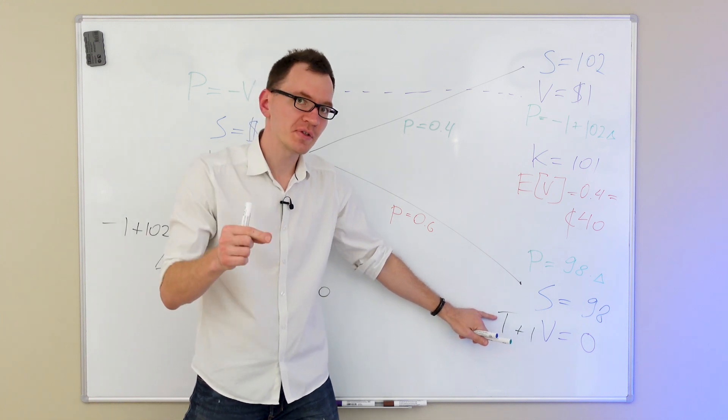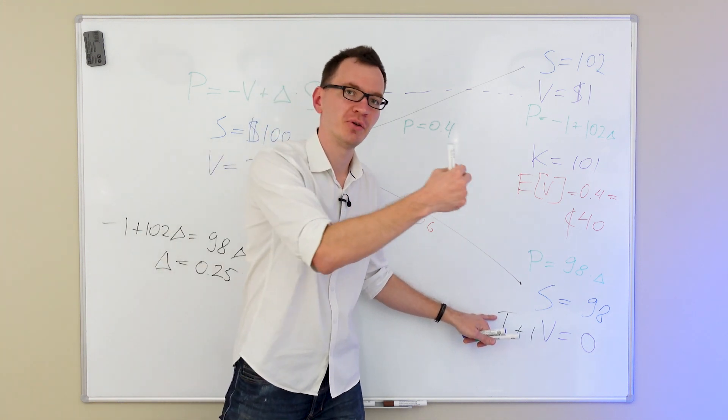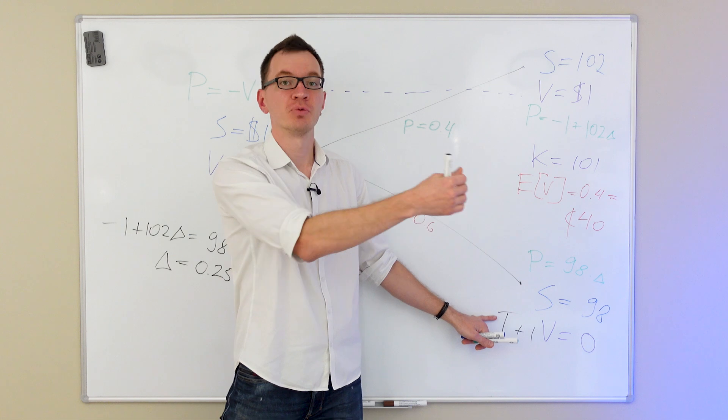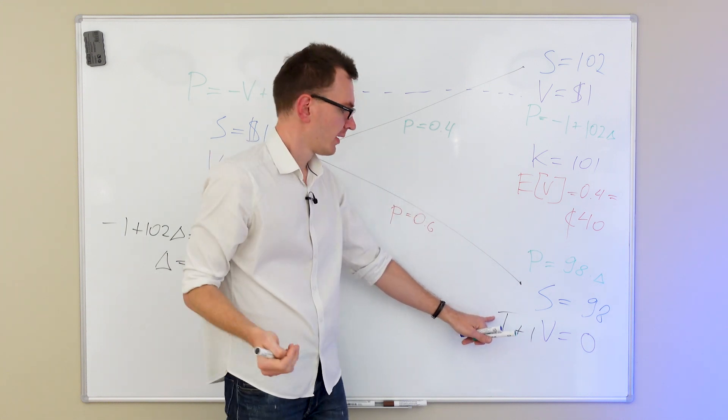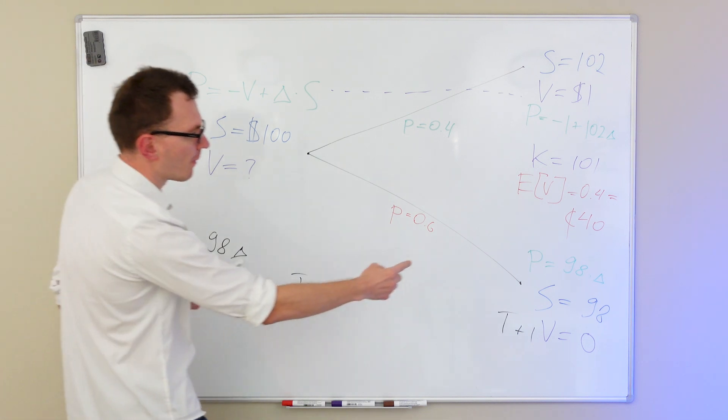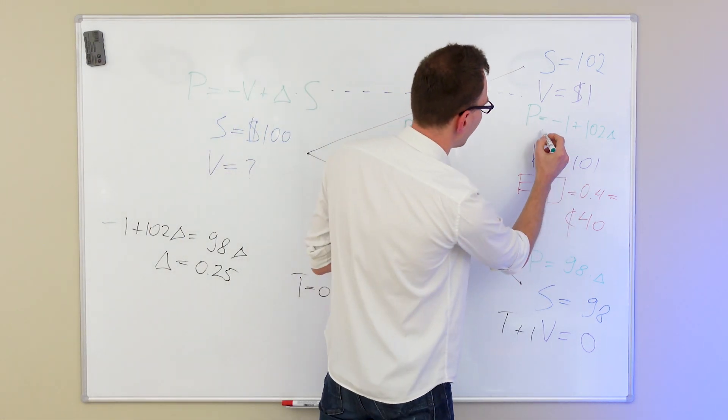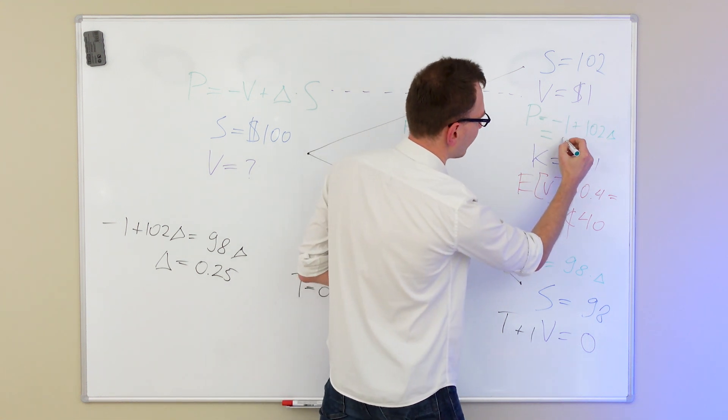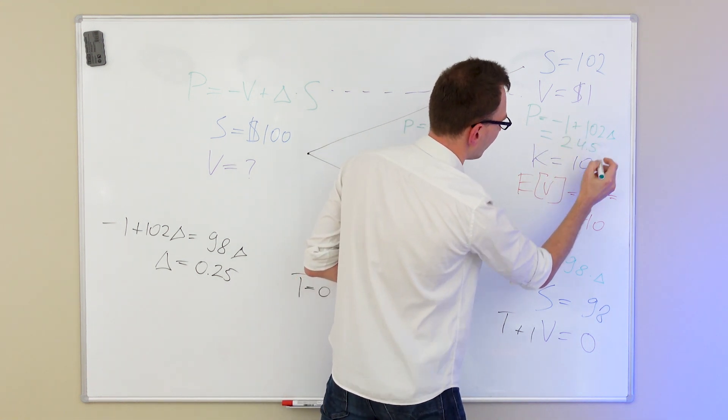So let's see what happens. If we set this portfolio value equal to that portfolio value, we're going to have the following equation. We're going to have minus 1 plus 102 times delta equals to the portfolio value in the down state, which is 98 times delta. Now, if we solve for delta, we'll get that delta equals 0.25, which means that we need to purchase a quarter of a share against our option in order to create a portfolio that is constant between the two states. And if that portfolio is constant, that means we know its value in the future, which means it's riskless. There is no uncertainty about it.